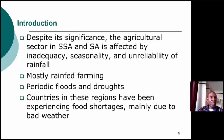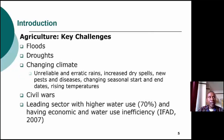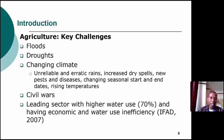Despite its significance, agriculture is facing challenges, mostly because it's rain-fed in sub-Saharan Africa, and most areas experience periodic floods and droughts. Therefore, countries in these regions normally experience food shortages, mainly due to weather variability. Key challenges include floods, droughts, and changing climate, but also civil unrest. Agriculture is also regarded as a system that is less efficient in terms of water use, with water use inefficiency measured up to 70% according to IFAD 2007.